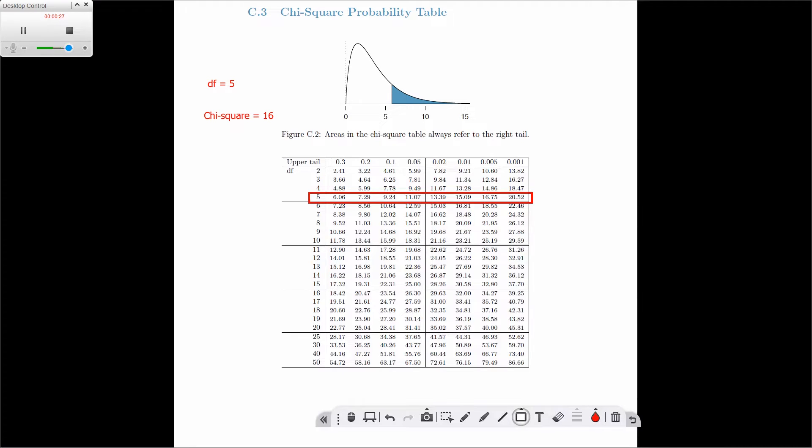So we'll see that we've got a 15.09 and we've got a 16.75, but the 16 is between those two, and that's then how we find our probability. So the p-value is going to be between 0.05 and 0.01.